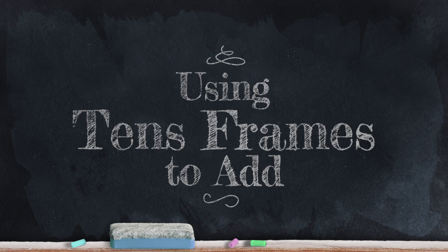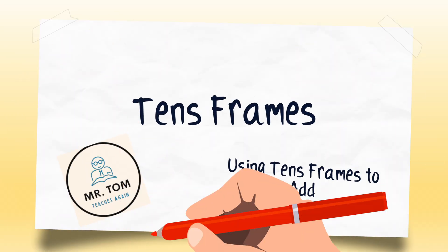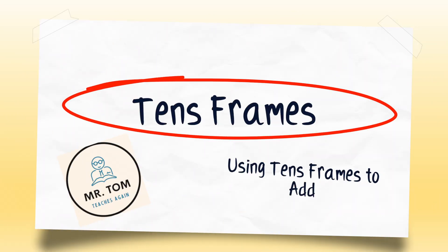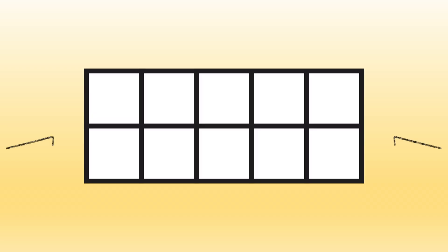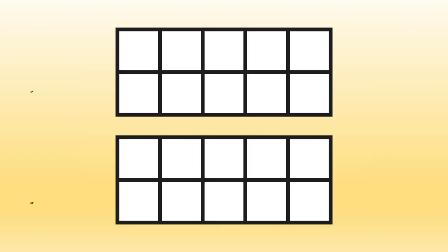A tens frame is awesome for adding and subtracting numbers up to 20. What does a tens frame look like? A tens frame is a rectangle that's divided into 10 equal parts. It looks like this. When we work with tens frames, we usually work with two empty frames at a time. Here, we have two empty frames.